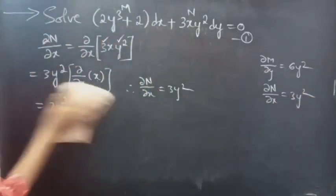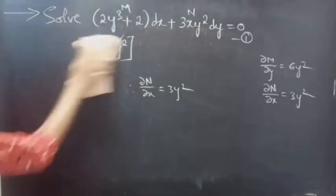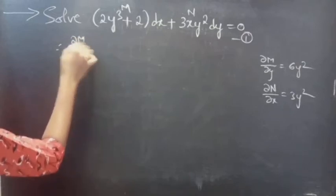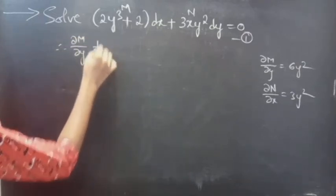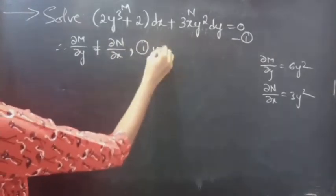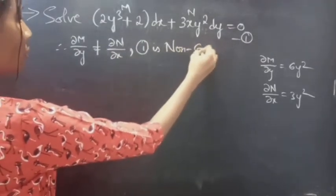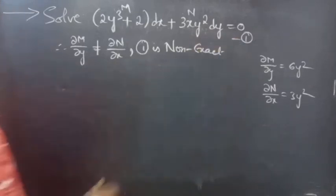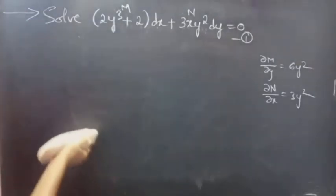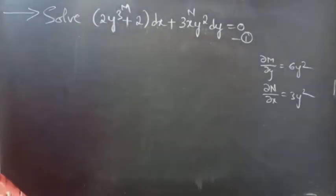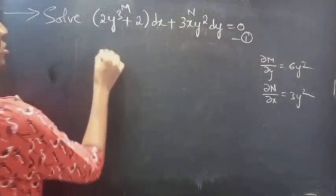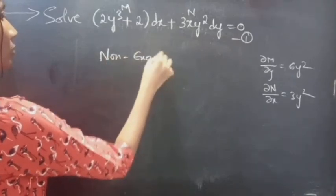So it's clear that ∂M/∂y is not equal to ∂N/∂x. Therefore, we can say that the given differential equation (equation 1) is non-exact. Now we need to reduce the given equation to an exact equation using an integrating factor. The given equation is non-exact.